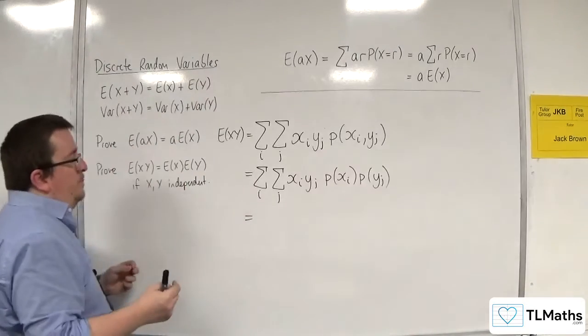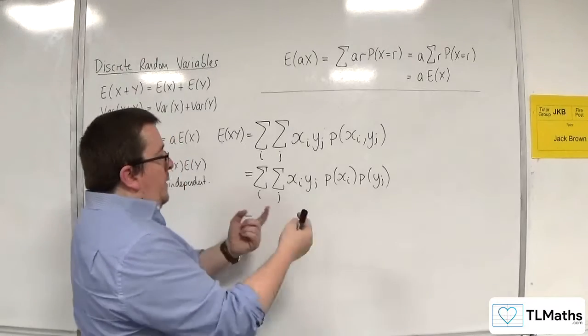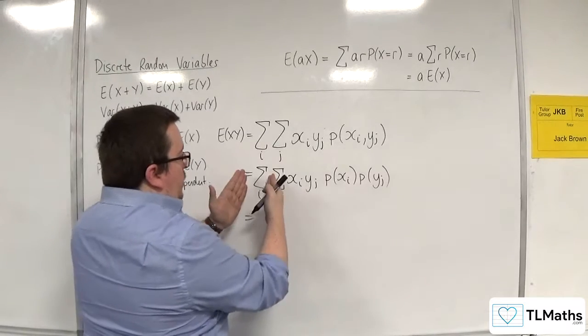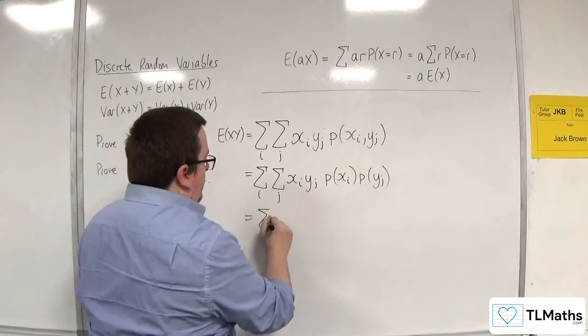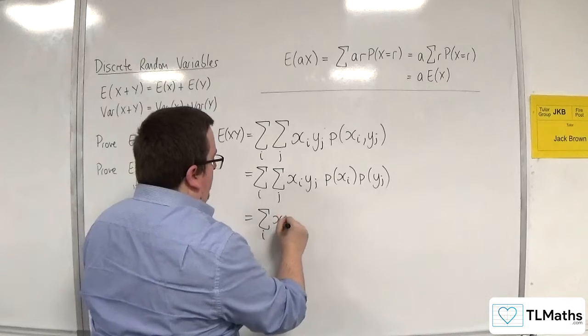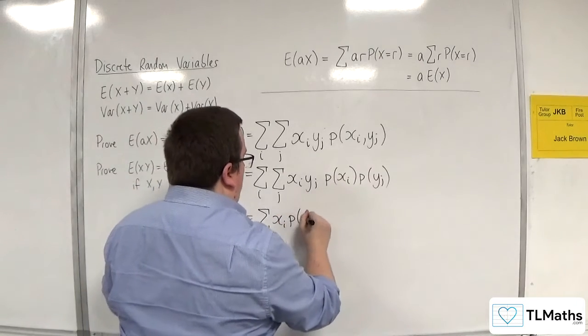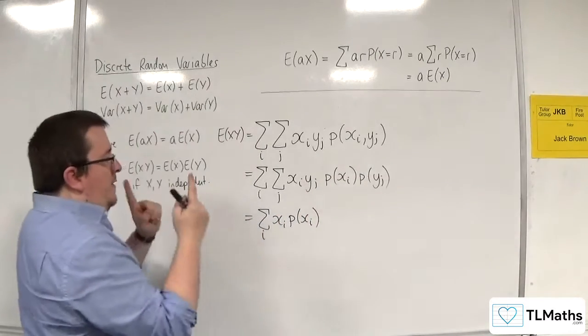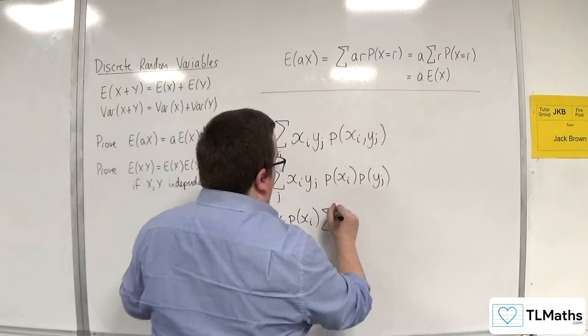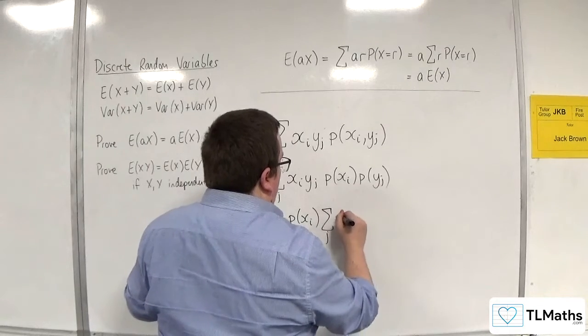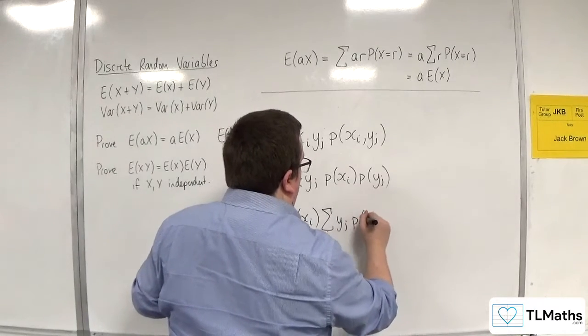Now, we haven't quite proved it yet. So, anything that's to do with an i can come out and join the summation that has the i on it. So, xi, and the probability of xi. And then I can have the summation of the j's. So, yj times the probability of yj.